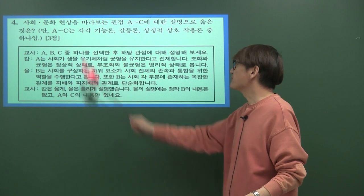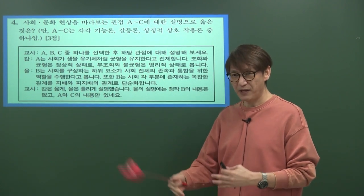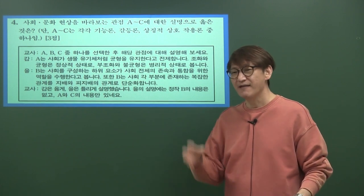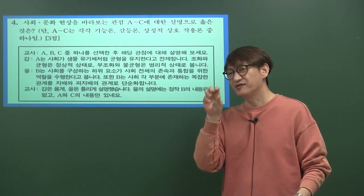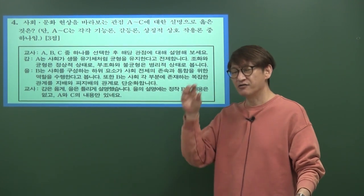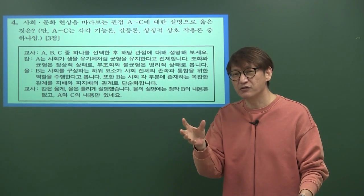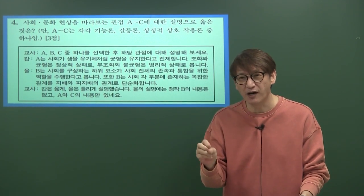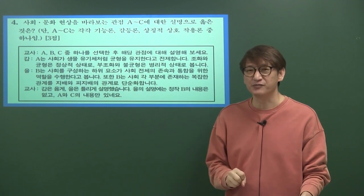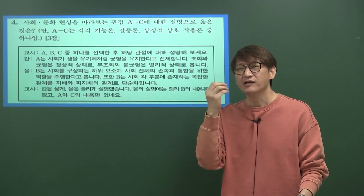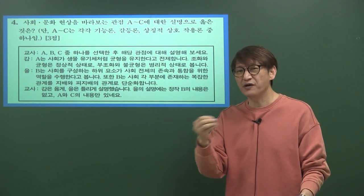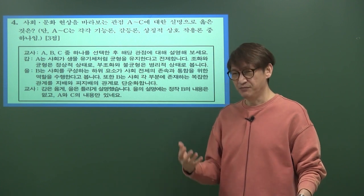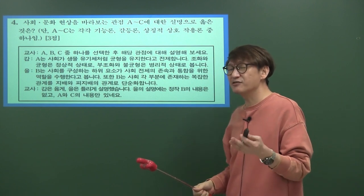4번 문제는 3점짜리로 정형화된 패턴인 사회문화현상을 바라보는 관점을 묻는 문제입니다. 관점은 크게 거시적 관점과 미시적 관점이 있습니다. 거시적으로는 사회구성원의 역할과 기능이 잘 될 때 사회가 발전한다는 기능론과, 사회구조적으로 파악하는 갈등론이 있습니다. 미시적으로는 사람들 간의 언어, 몸짓 등 상호적 작용을 통해 사회를 판별하는 상징적 상호작용론이 있습니다.